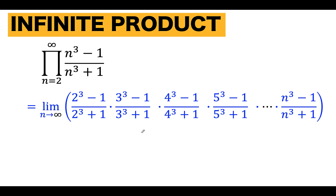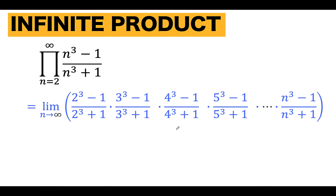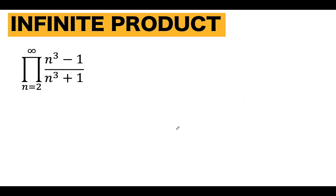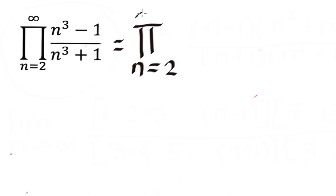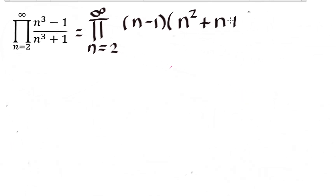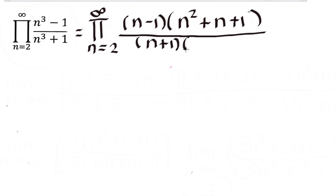You can pause the video and see if you can solve this interesting calculus problem. Now let's solve it together. Let's begin by noting that n cubed minus 1 is a difference of two cubes, which we can factor. So we write pi from n equals 2 to infinity. The factored form of n cubed minus 1 is (n minus 1)(n squared plus n plus 1), and the factored form of n cubed plus 1 is (n plus 1)(n squared minus n plus 1).